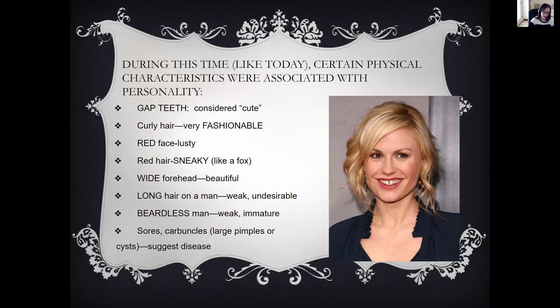The fox flatters Chanticleer by begging him to sing a pretty song, but it turns out to be a trick. As soon as Chanticleer stretches his neck to project his great voice, the fox grabs him by the throat and carries him off. Not to be outdone, Chanticleer — still in the clutches of the fox — suggests that the fox ought to shout to the barnyard how cleverly he caught the rooster. The fox falls for the very trick of flattery he played upon Chanticleer. As soon as the fox opens his jaws to brag, the rooster flies away free. The moral: 'Lo, thus it goes with carelessness, and with too great a trust in flattery.'